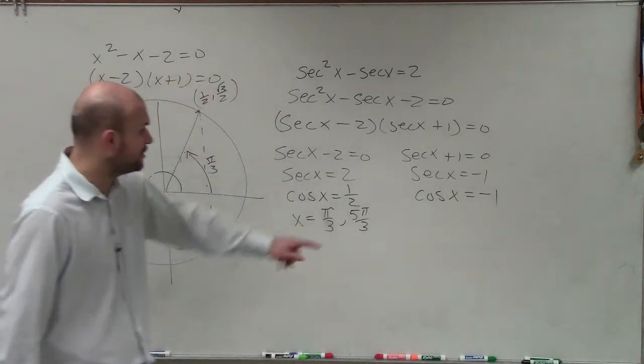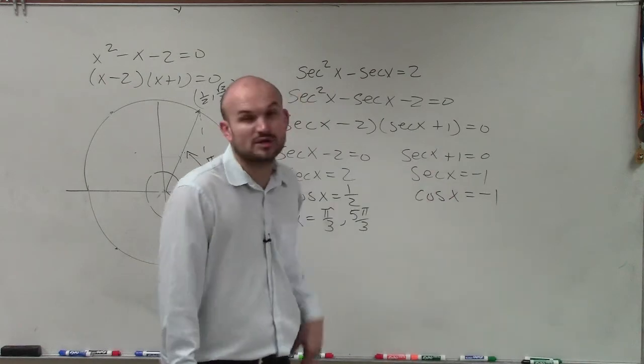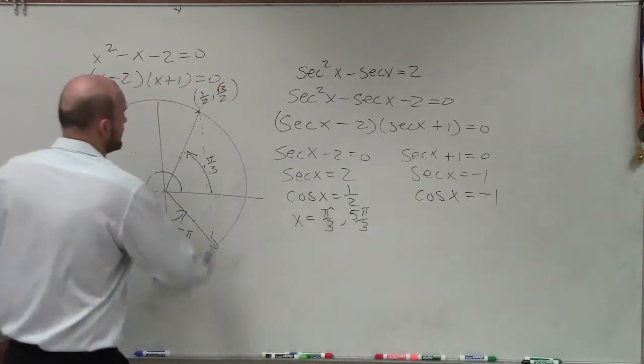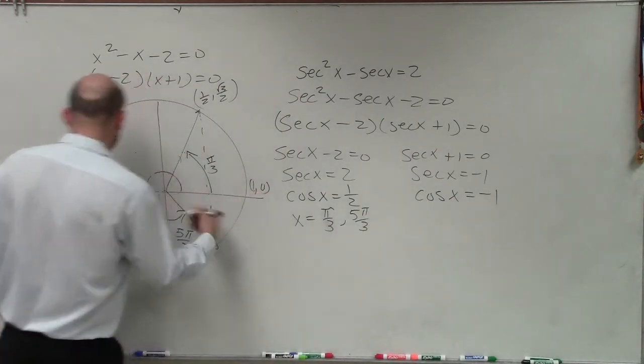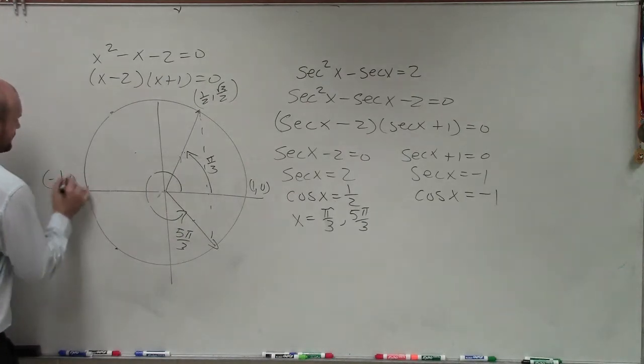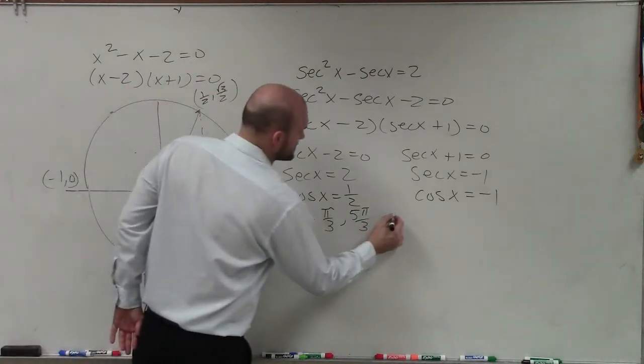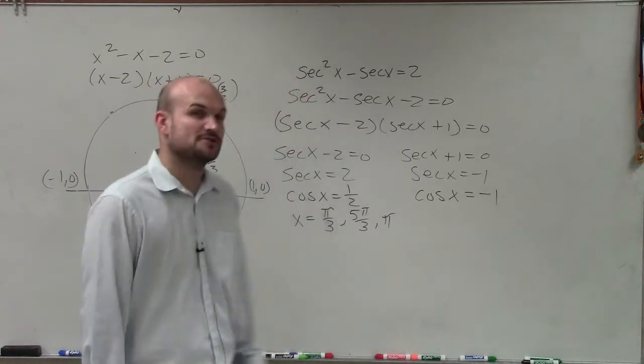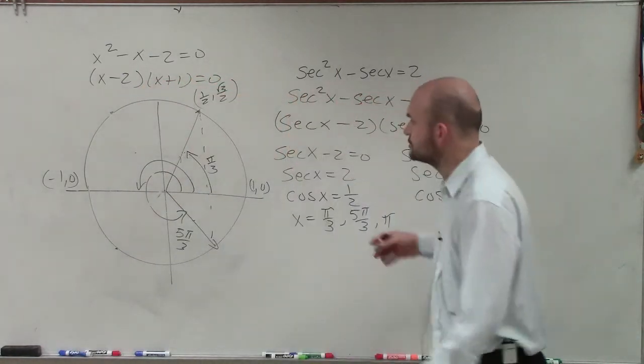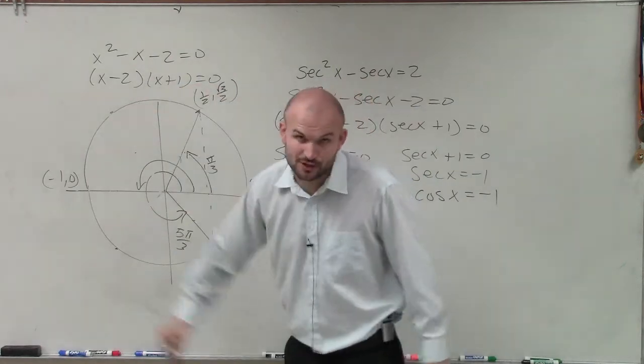But that's not the whole equation. The equation also asks us for the solution when cosine of x equals negative 1. Well, we know if this is 1 comma 0, then this is going to be negative 1 comma 0. So that angle is going to be pi. Now that would be all the solutions between 0 and 2 pi, which covers the whole unit circle.